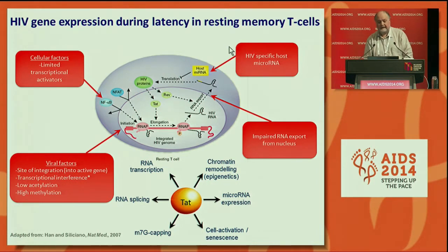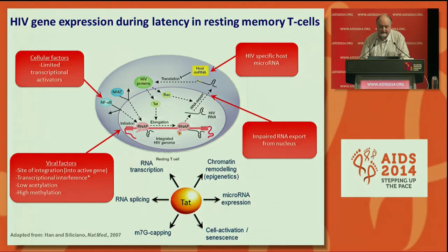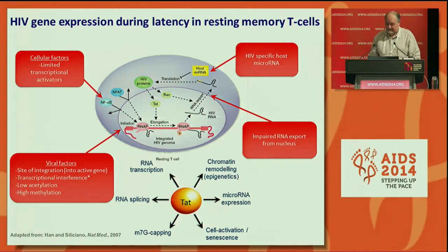There are HIV-host specific factors such as microRNAs and impaired RNA export from the nucleus. Central to a lot of these processes is the HIV TAT protein, the transactivator of transcription, which is involved in other functions apart from RNA transcription that impact on the status of a latently infected cell. In low levels of TAT, latency can be continued, whereas if you provide sufficient TAT to the cell, we can change it into a productively infected cell.